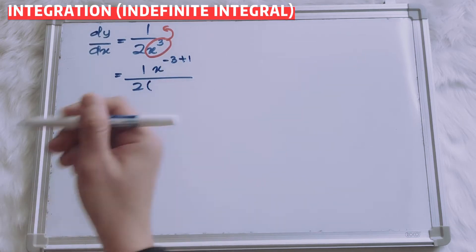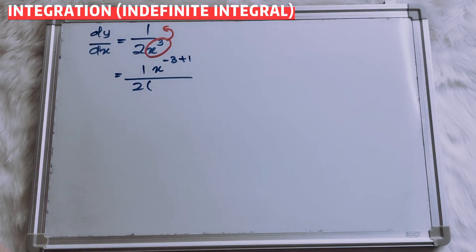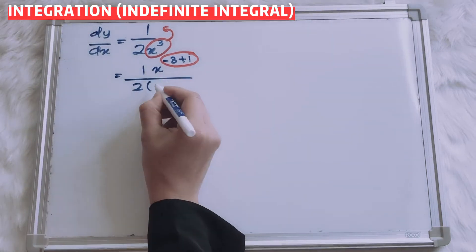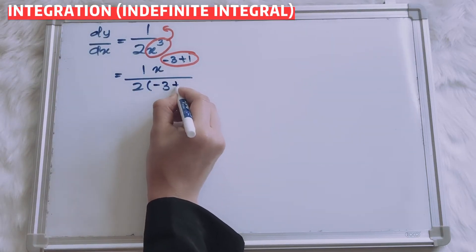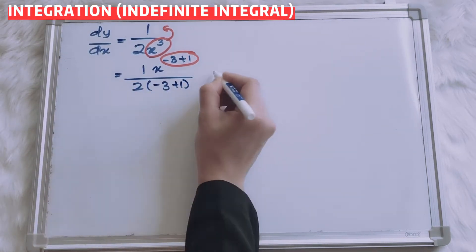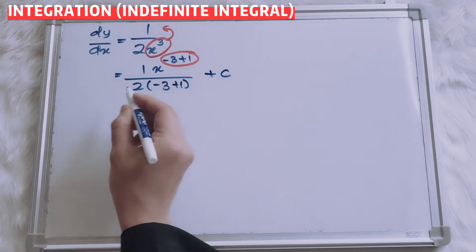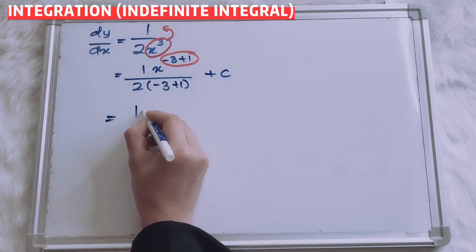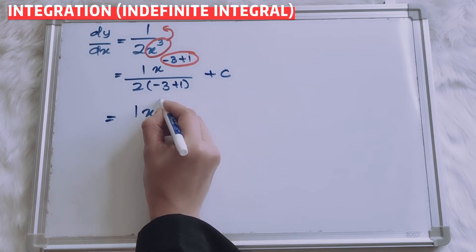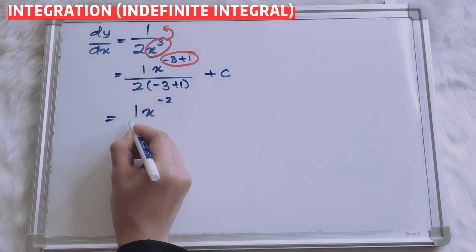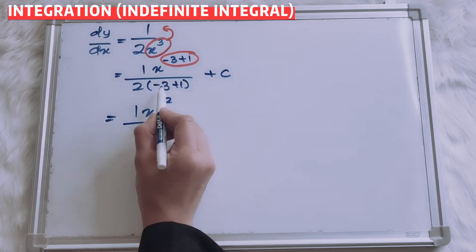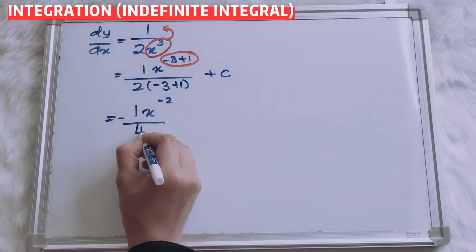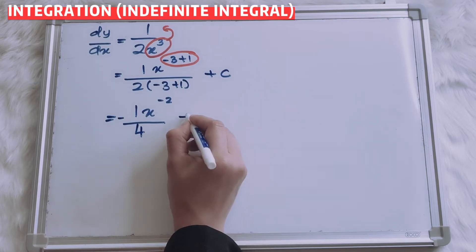You have to copy back the denominator here. So, negative 3 plus 1, plus C. C is the constant. Now you will have 1 times x to the power of negative 2, over negative 2 times 2, which is negative 4. Plus C.